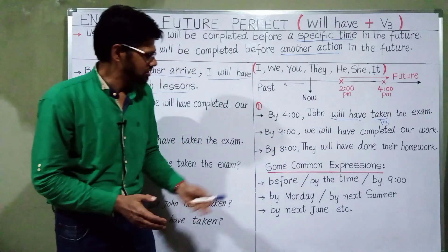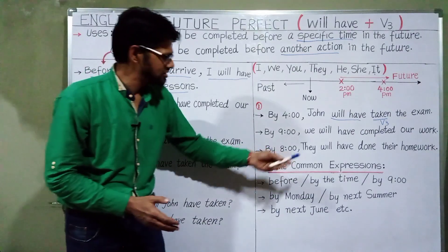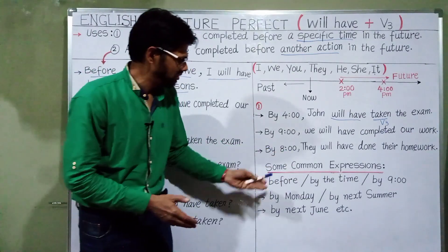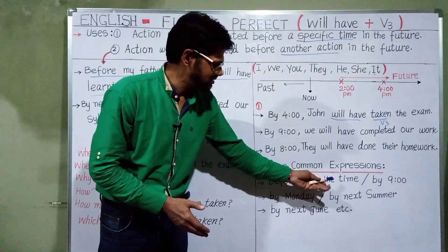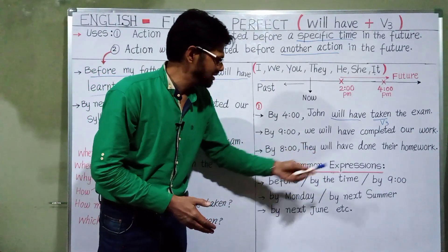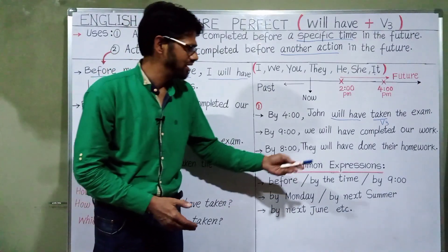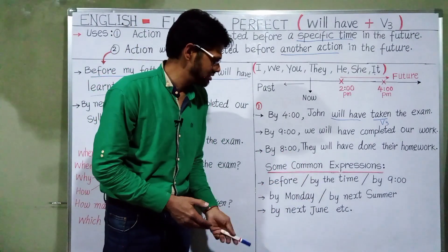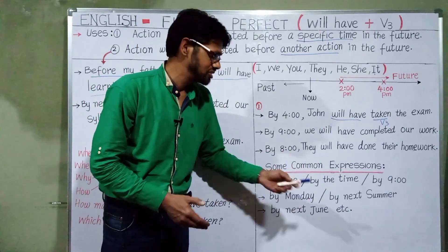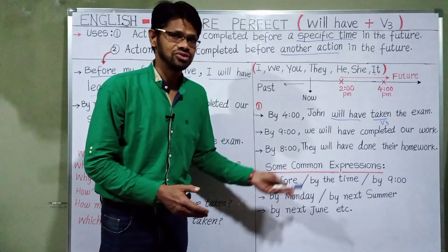Some common expressions used with future perfect tense are: before, by the time, by 9 o'clock, by Monday, by next summer, by next June, etc.